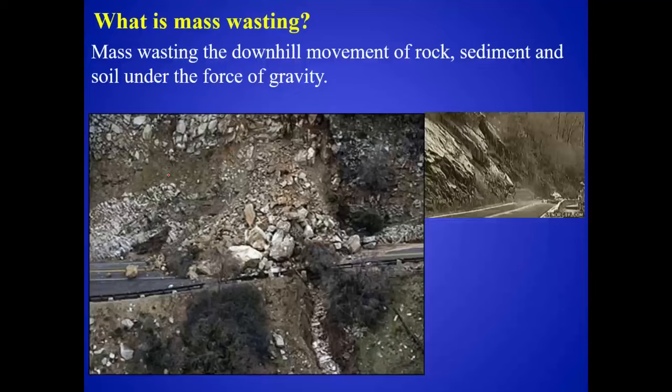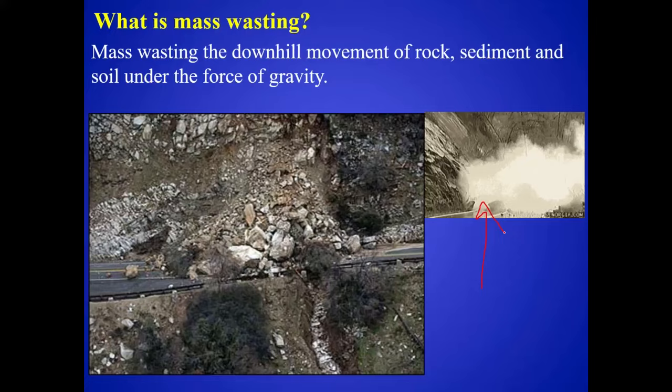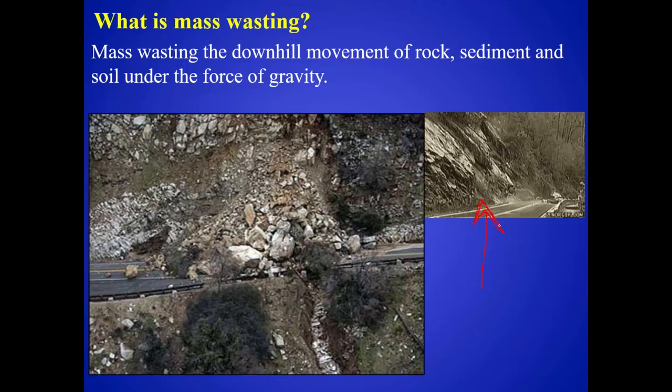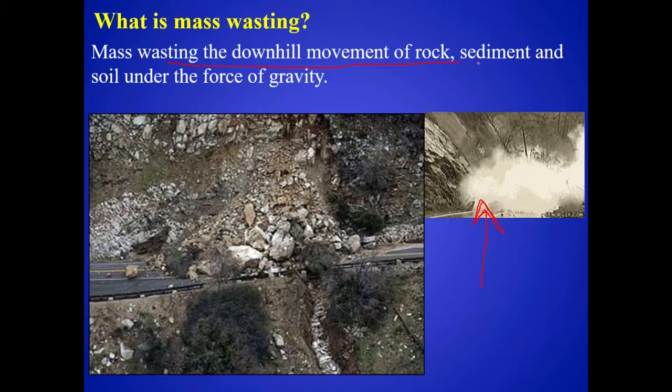Mass wasting — that's a weird word you probably haven't heard before. What is mass wasting? You might know it colloquially as a landslide, but it's really just the downhill movement of rock, sediment, and soil under the force of gravity. That's all it really is — it is in a way just an erosion process where sediment, soil, and rock are being transported.